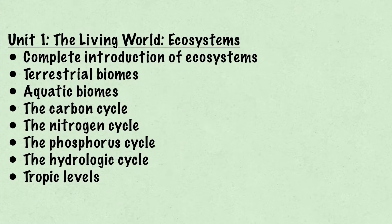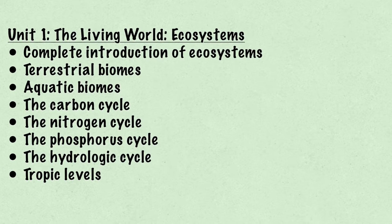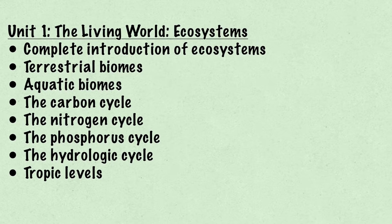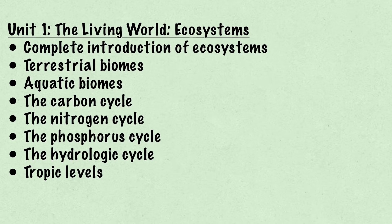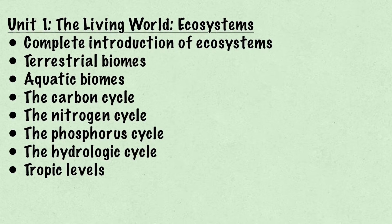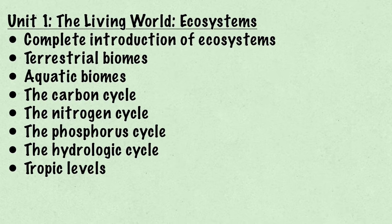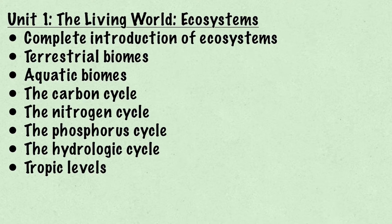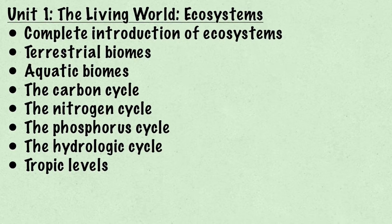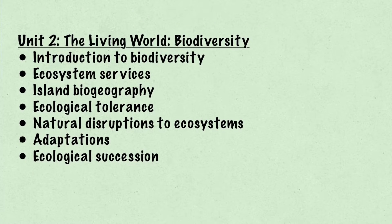In Unit 1 we have the Living World: Ecosystems. We start with the complete introduction of ecosystems and terrestrial biomes, aquatic biomes, the carbon cycle, the nitrogen cycle, the phosphorus cycle, the hydraulic cycle, and the trophic levels.